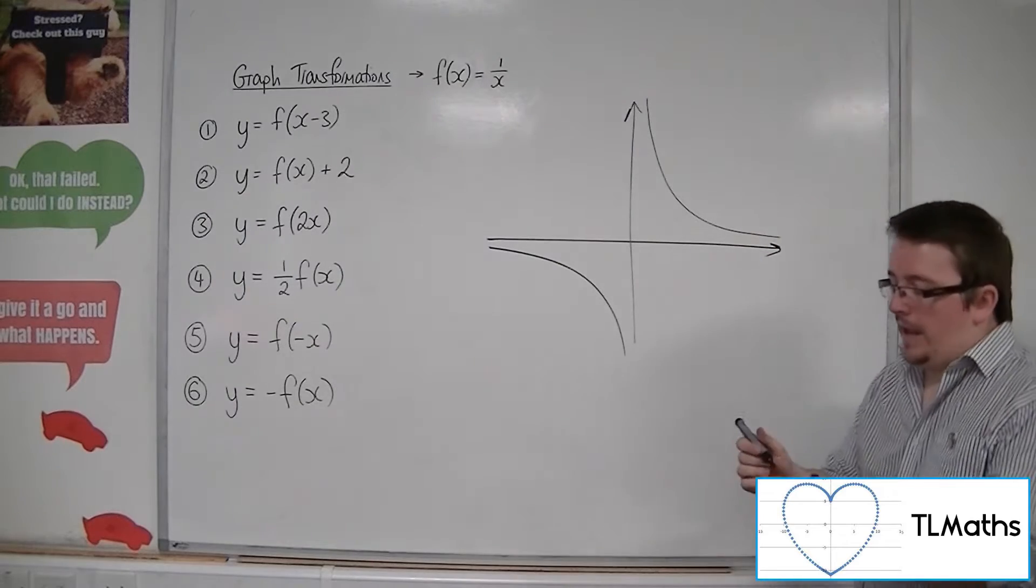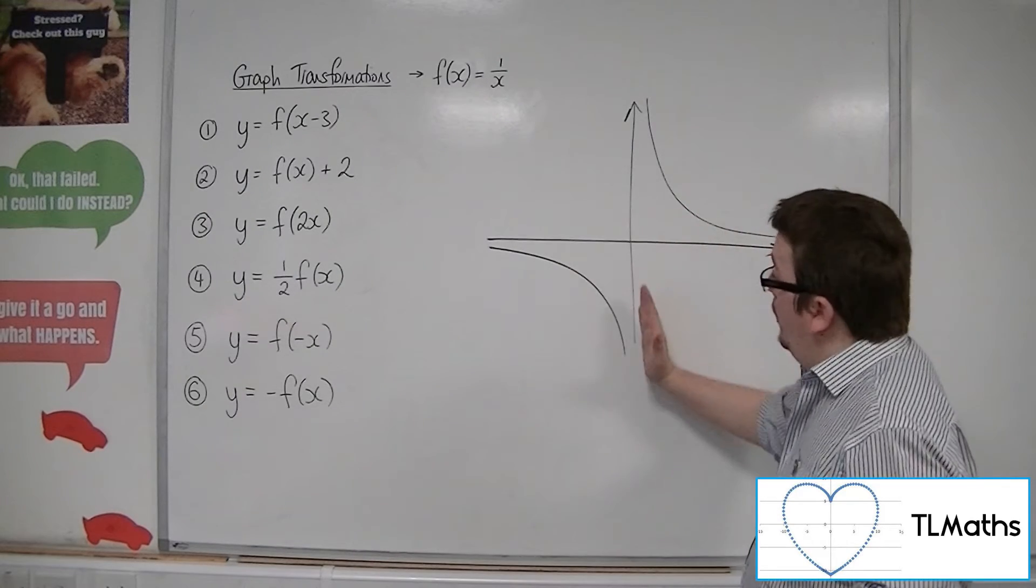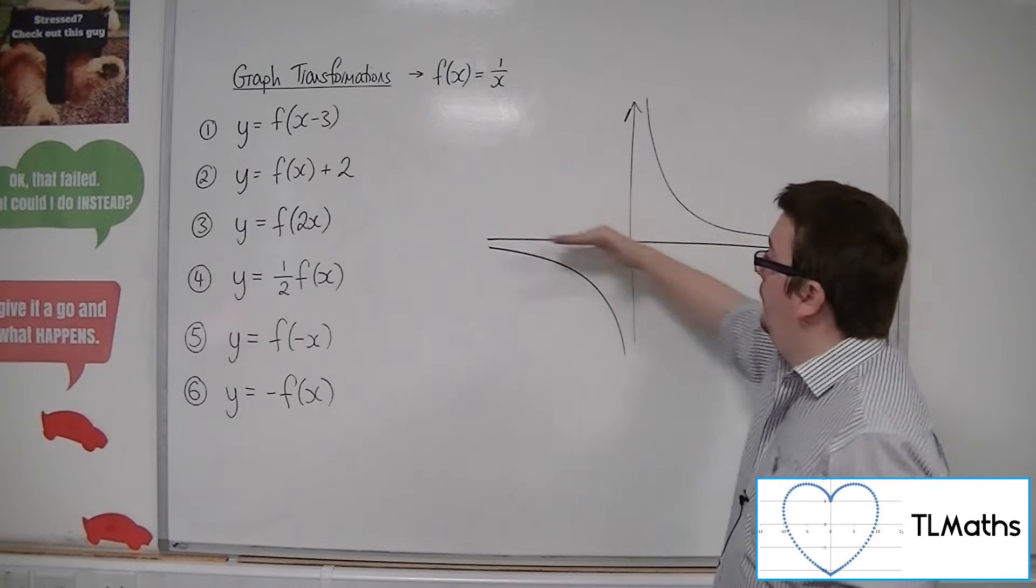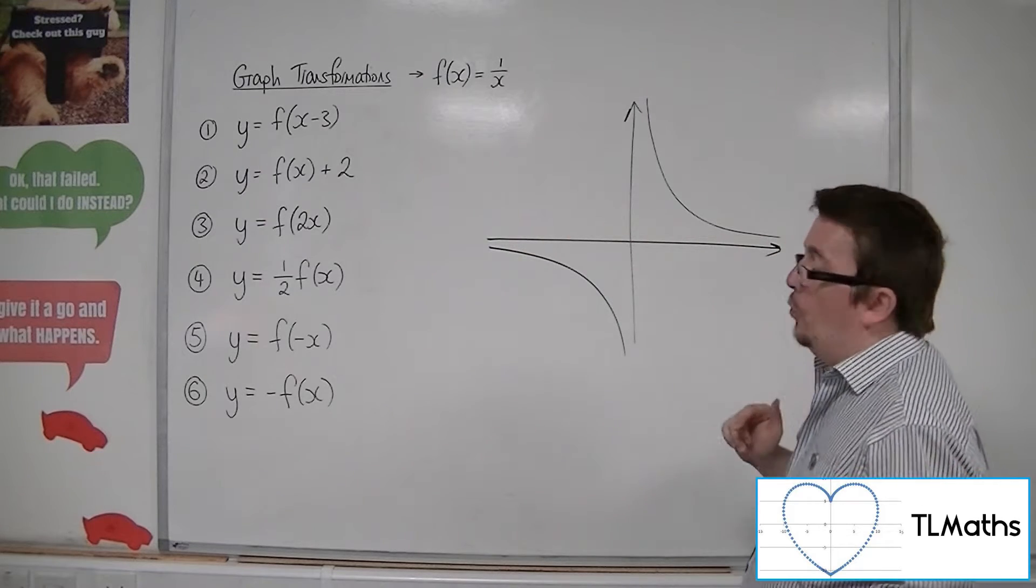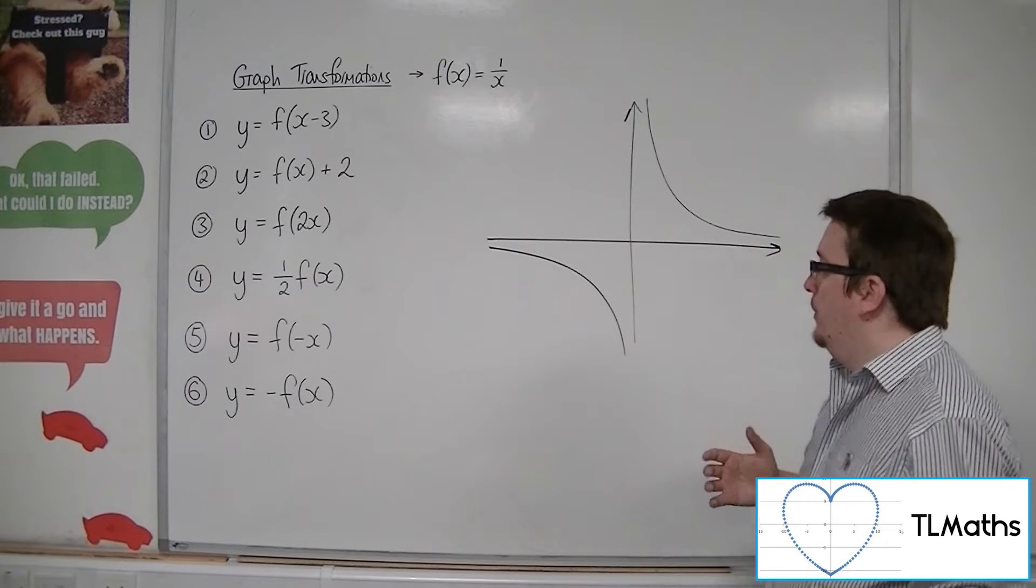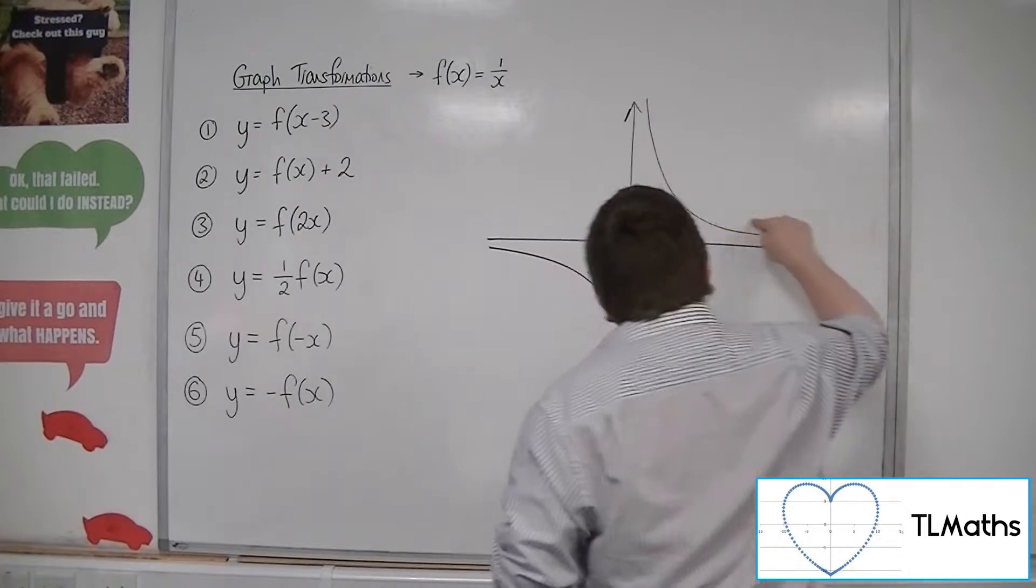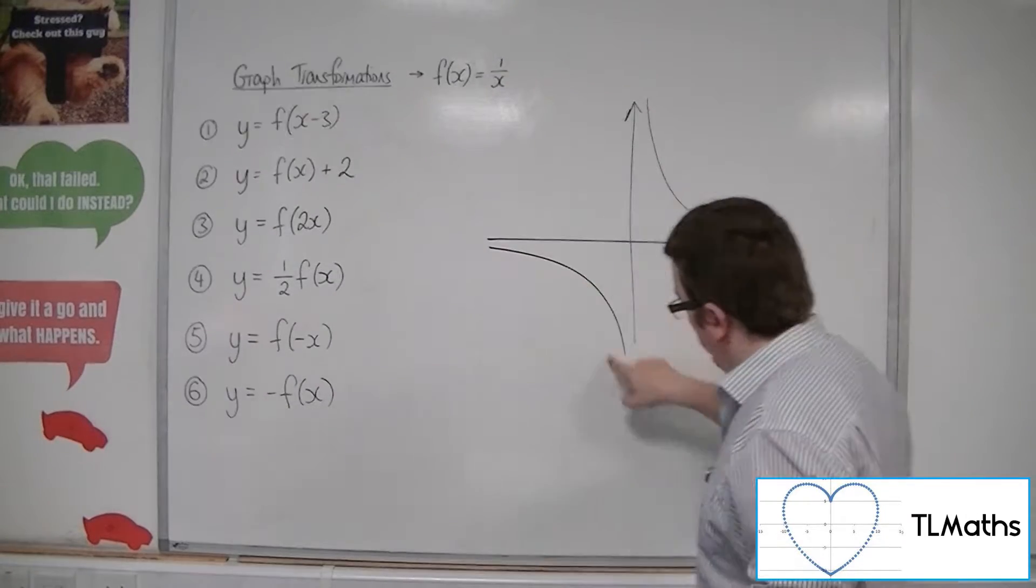It has a vertical asymptote at x equals 0, the y-axis, and a horizontal asymptote at the x-axis, or y equals 0. So these are lines that the curve is tending towards, as you can see.